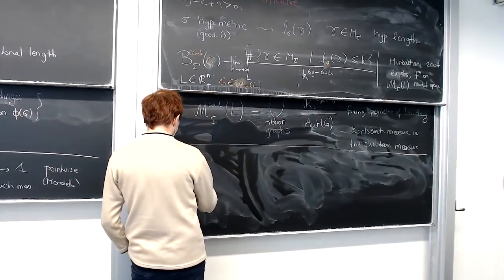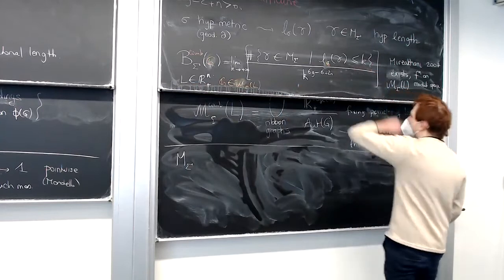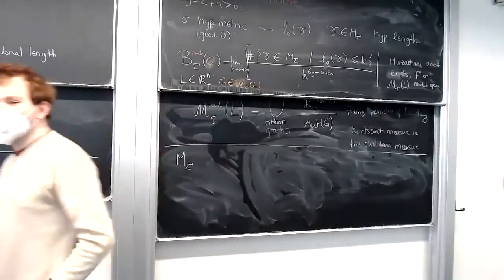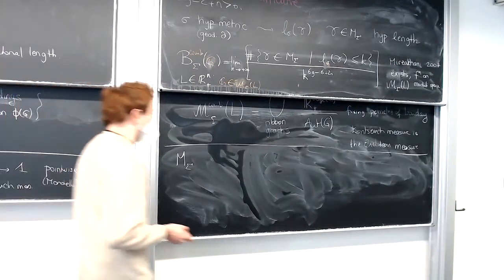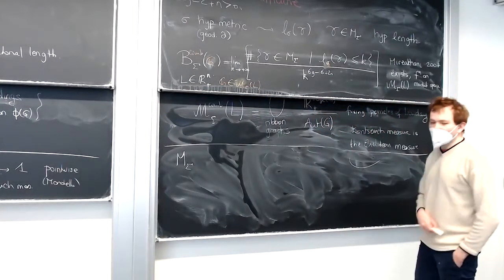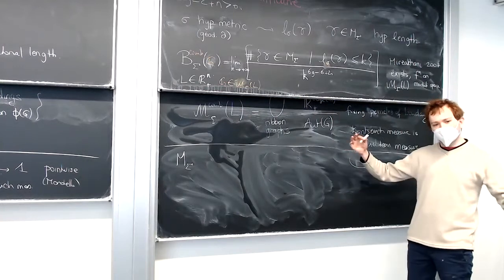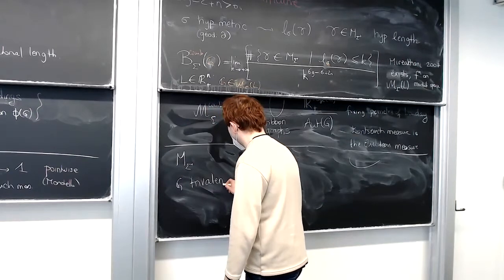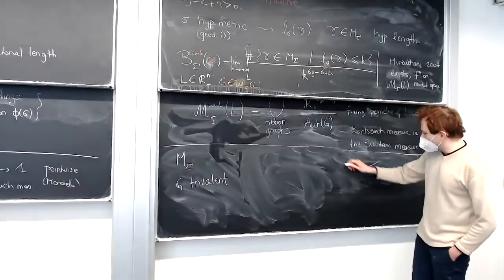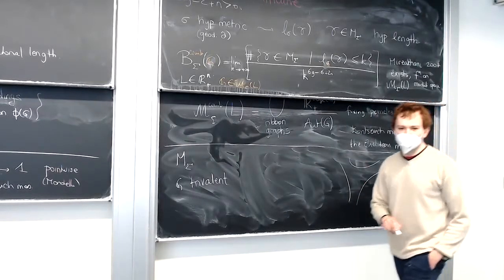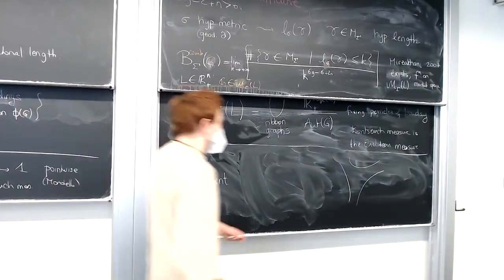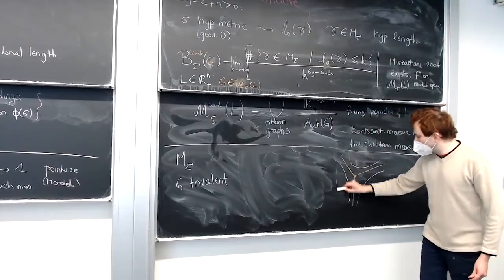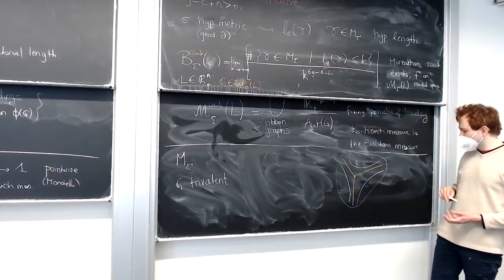So we want to compute the number of multi-curves that have combinatorial length — in the ribbon graph metric — smaller than k. We need a combinatorial description of multi-curves that uses the information of the graph. Whenever you have a simple closed curve or multi-curve you can homotope it close to the graph. So I need to understand the local pictures: here's a piece of the surface, and the ribbon graph looks like this. These are boundaries, and this is just a piece of the surface closing up to boundaries.